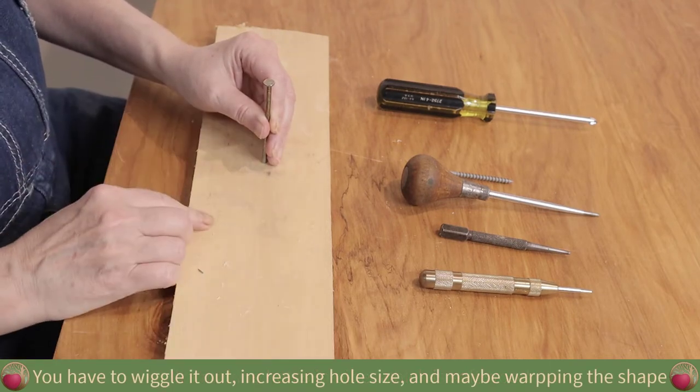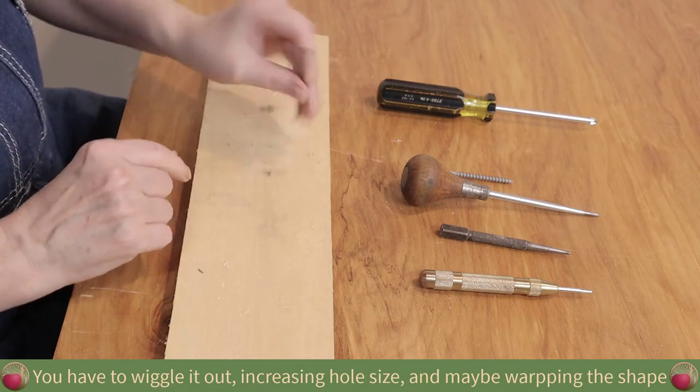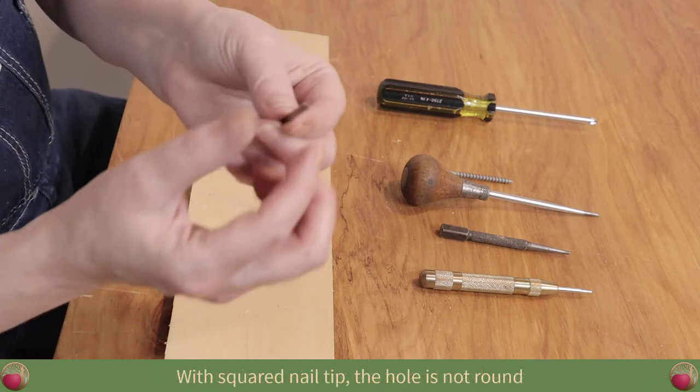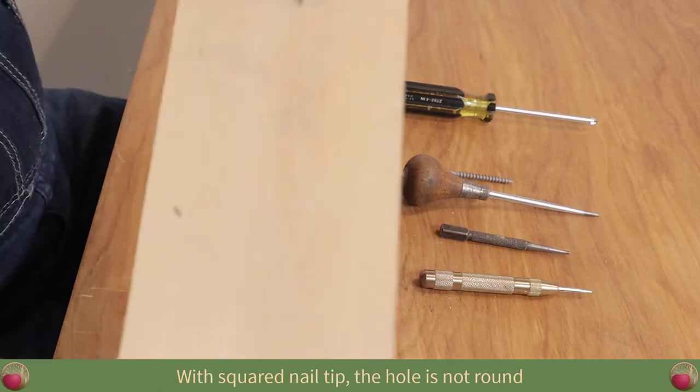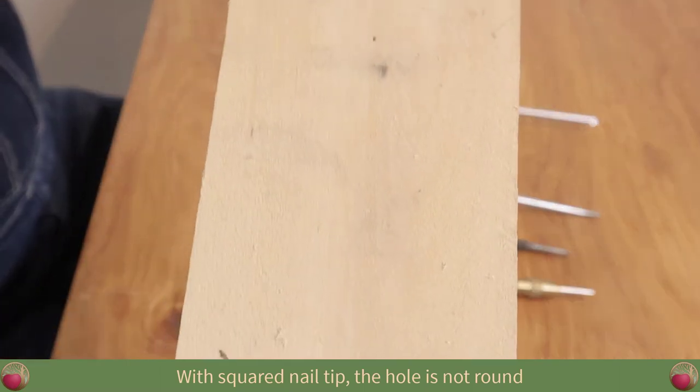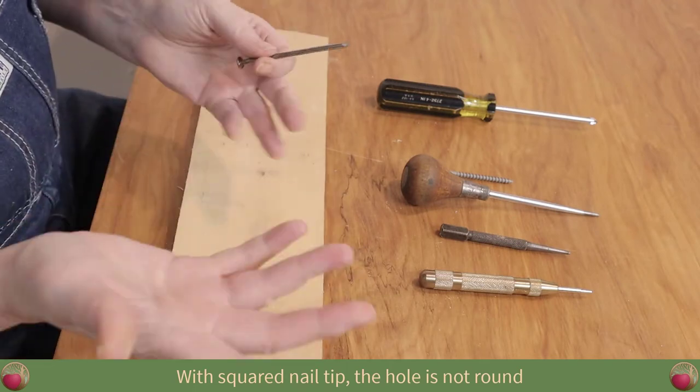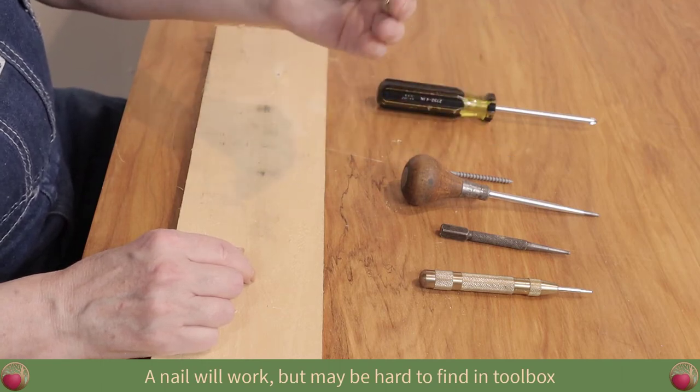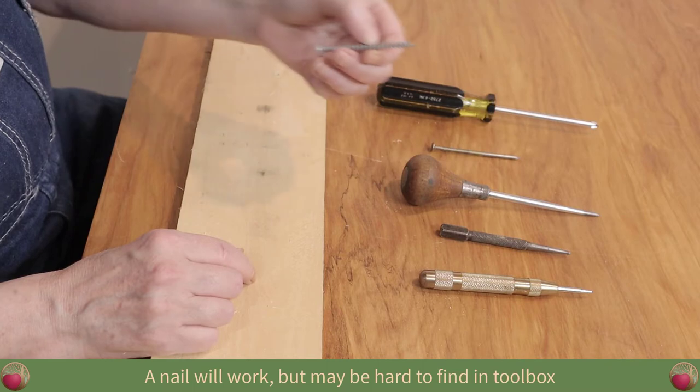Now, the thing that I don't like about this is to get it out, you got to wiggle it. So you're going to make your hole just a little bit bigger. Not that that matters a lot. But I really don't like the square tip on here because it makes a square hole. I know that's probably just impossible for you to see. But it makes a square hole. And the tip of your drill bit is going to be round. So not necessarily my favorite tool.